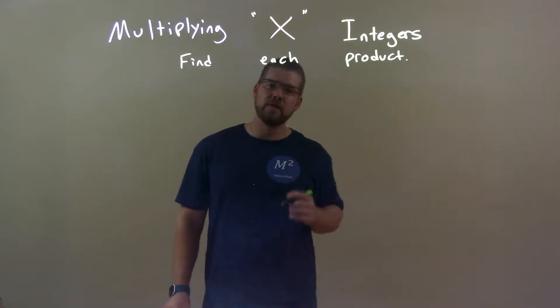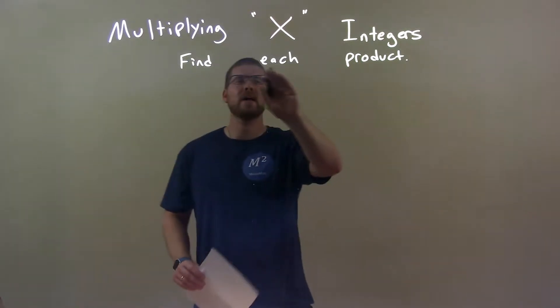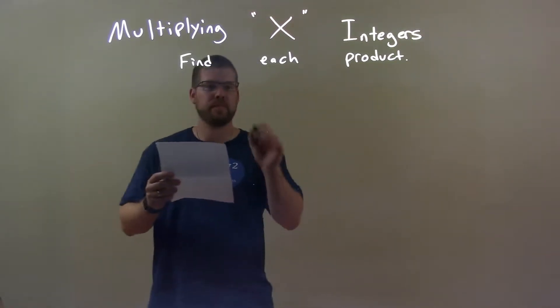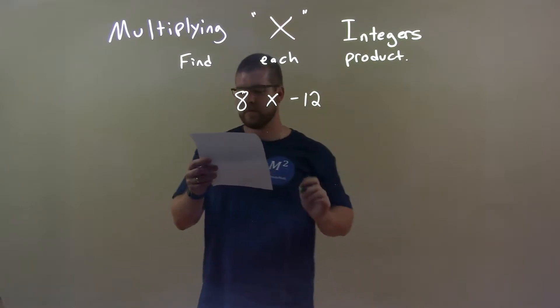Hi, I'm Sean Gannon and this is MinuteMath. Today we're learning about multiplying integers and finding each product. So if I was given these integers, 8 times a negative 12, okay?